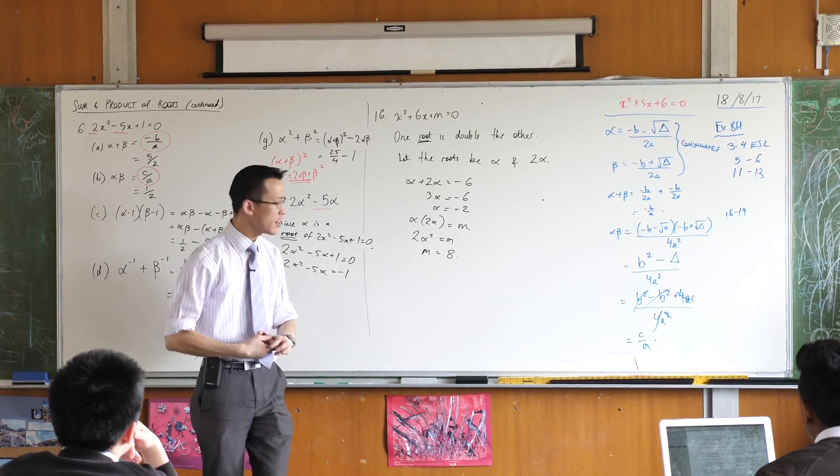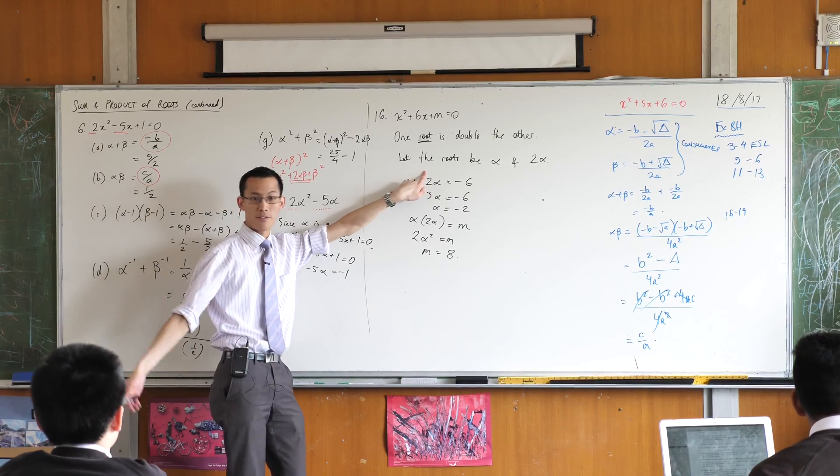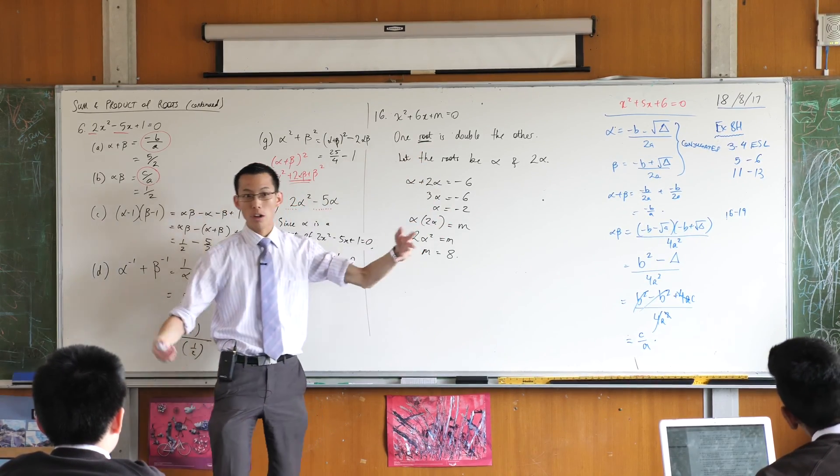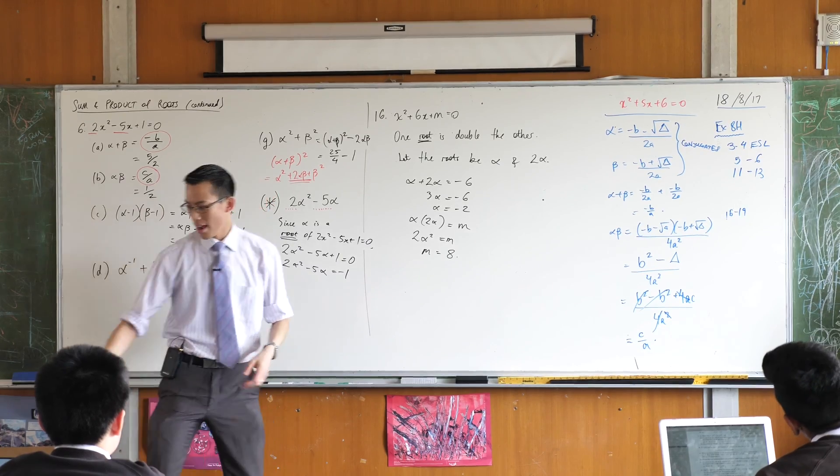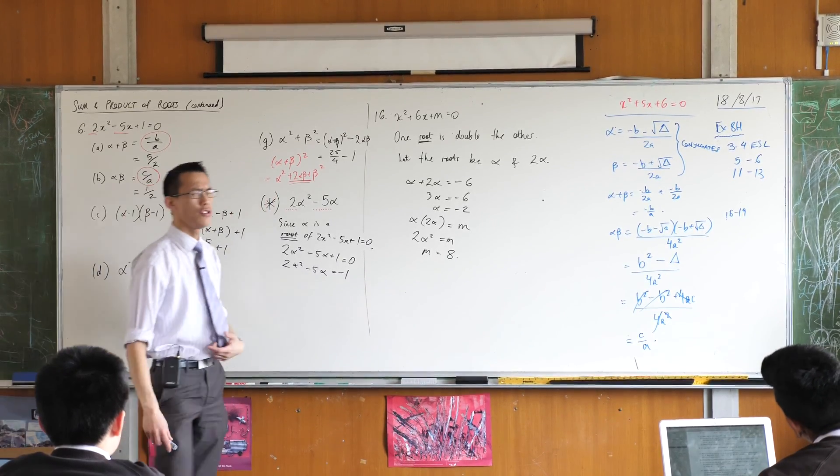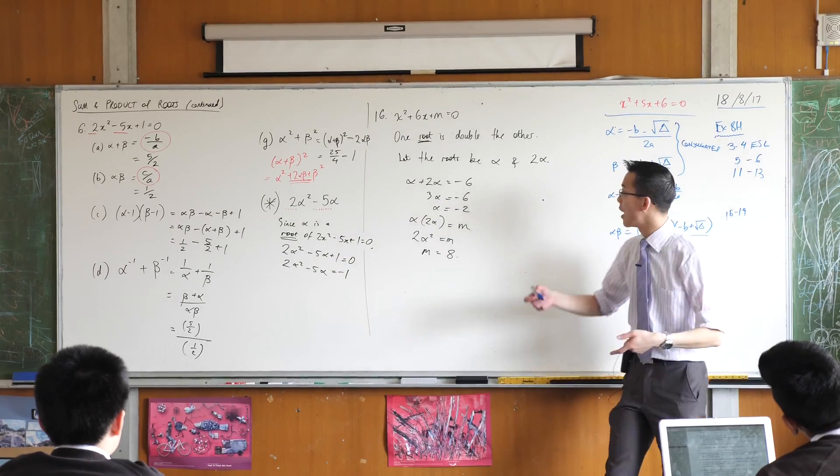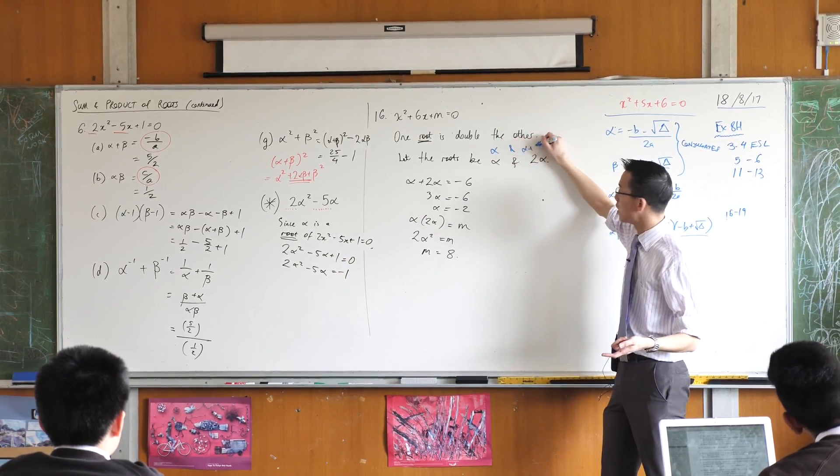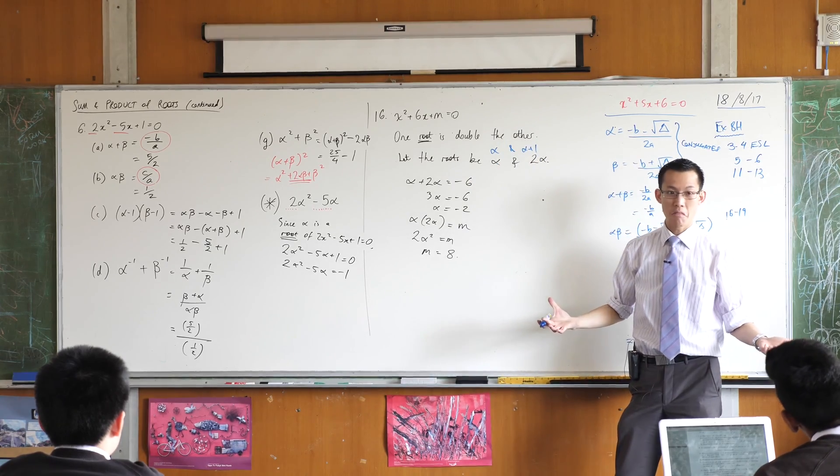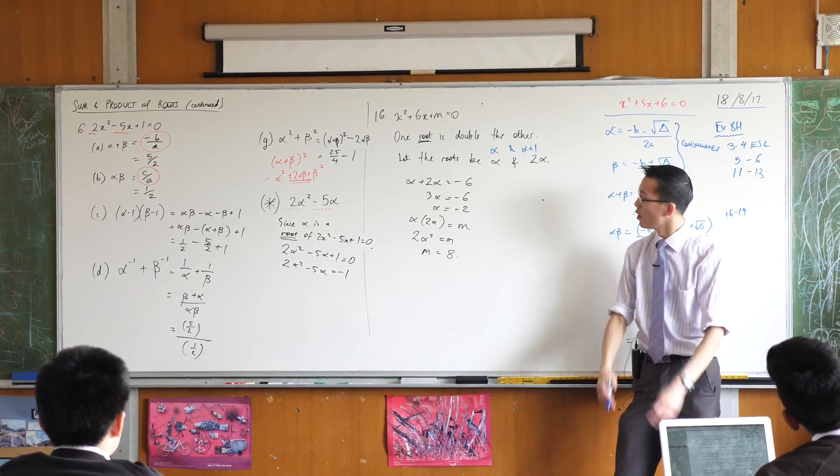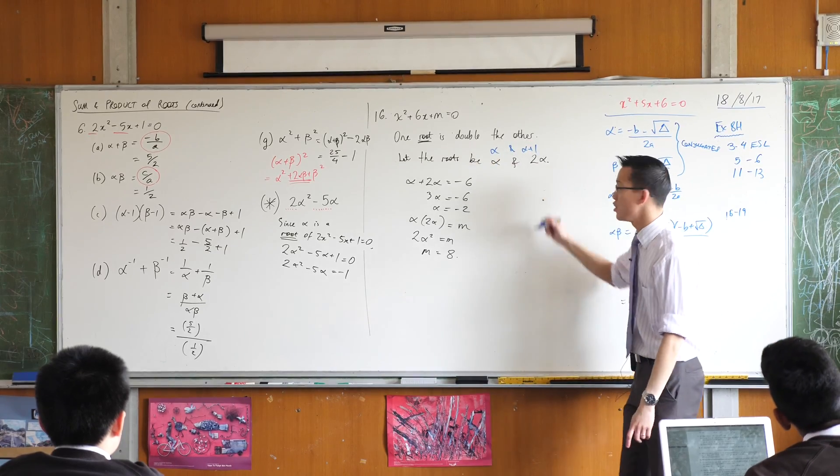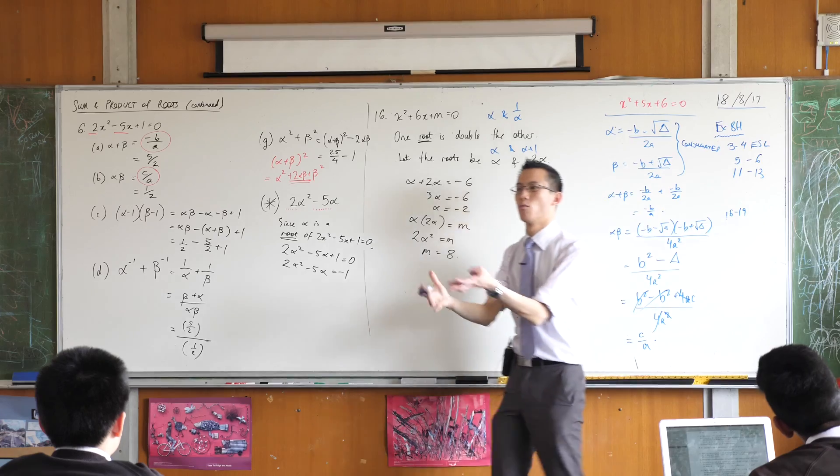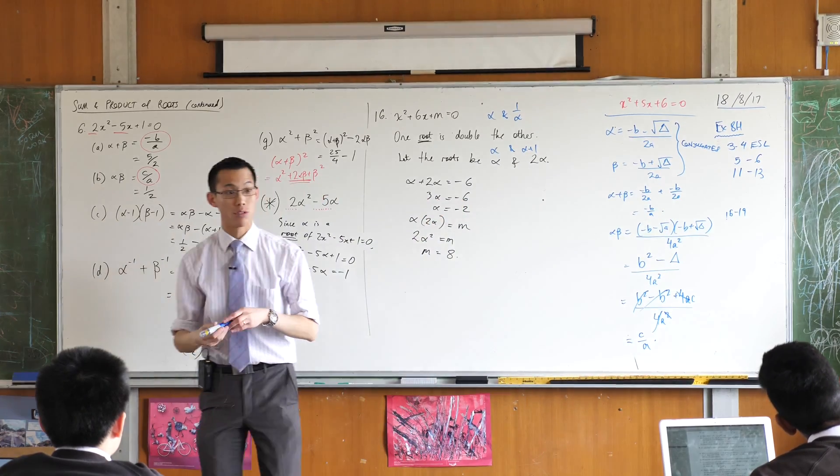So just define appropriately based on whatever information the question supplies to you. We could have said one root is one unit away from the other root. If one root was one unit away from the other root, then you would define them as alpha and alpha plus 1. Or just as easily, alpha minus 1. That's still going to be one unit apart. What if one root were the reciprocal of the other? You would define them as alpha and 1 over alpha. So you just define them however the language of the question tells you to.